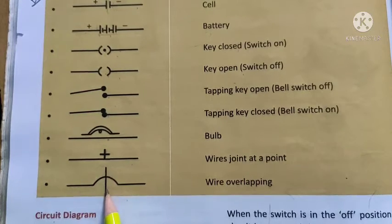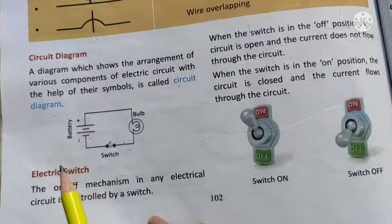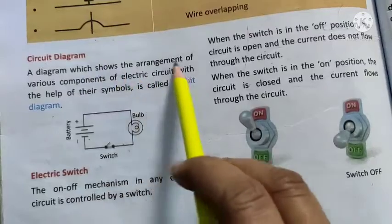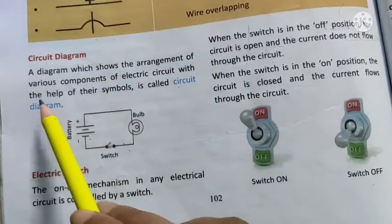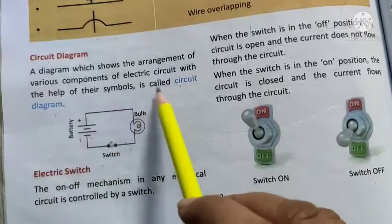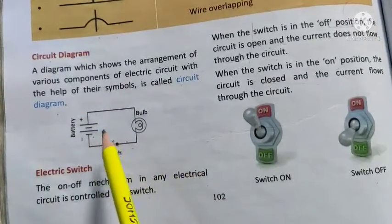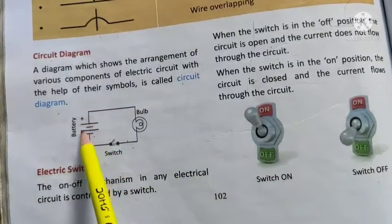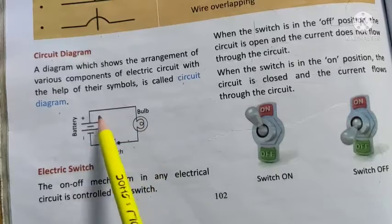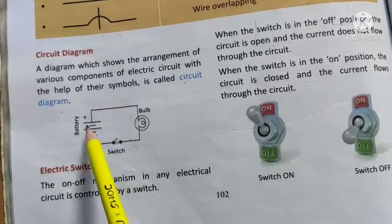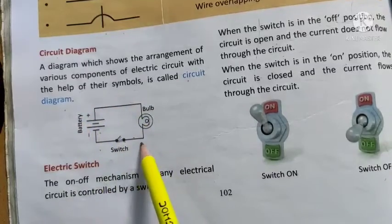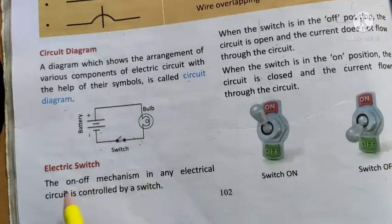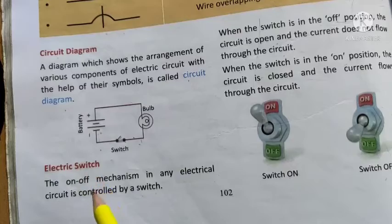Now, a circuit diagram: a diagram which shows the arrangement of various components of an electric circuit with the help of their symbols is called a circuit diagram. Using these symbols, we can draw a circuit diagram — for example, using battery, switch, and bulb symbols together. So you must prepare and remember all the symbols.